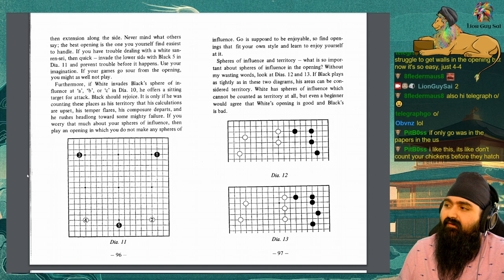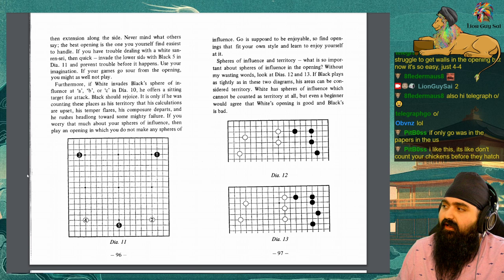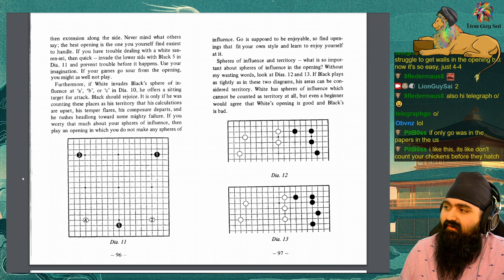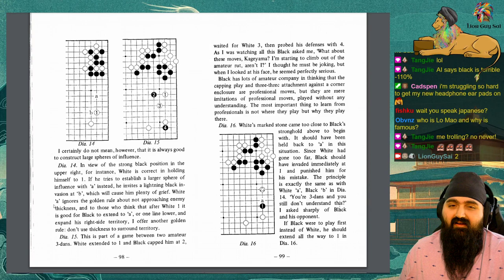Spheres of influence and territory. What is so important about spheres of influence in the opening? Without my wasting words, look at diagrams 12 and 13. If black plays as tightly as in these two diagrams, his areas can be considered territory. White has spheres of influence which cannot be counted as territory at all, but even a beginner would agree that white's opening is good and black's is bad.